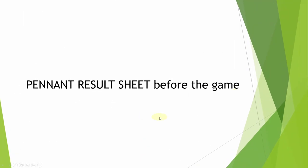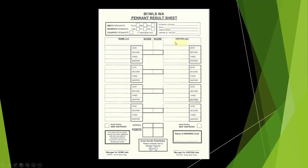So the pennant result sheet before the game — I'm sure everyone's seen one. The home team has the pennant result sheet; they provide them. So if you're the away team manager, you don't need it. Home side manager, make sure you put all your names in there in plenty of time. A really important thing is the umpire of the day, especially if there are any protests or things that BowlsWA needs to look at. We need to know who that umpire of the day is. As the home side, make sure that umpire of the day information is filled in.